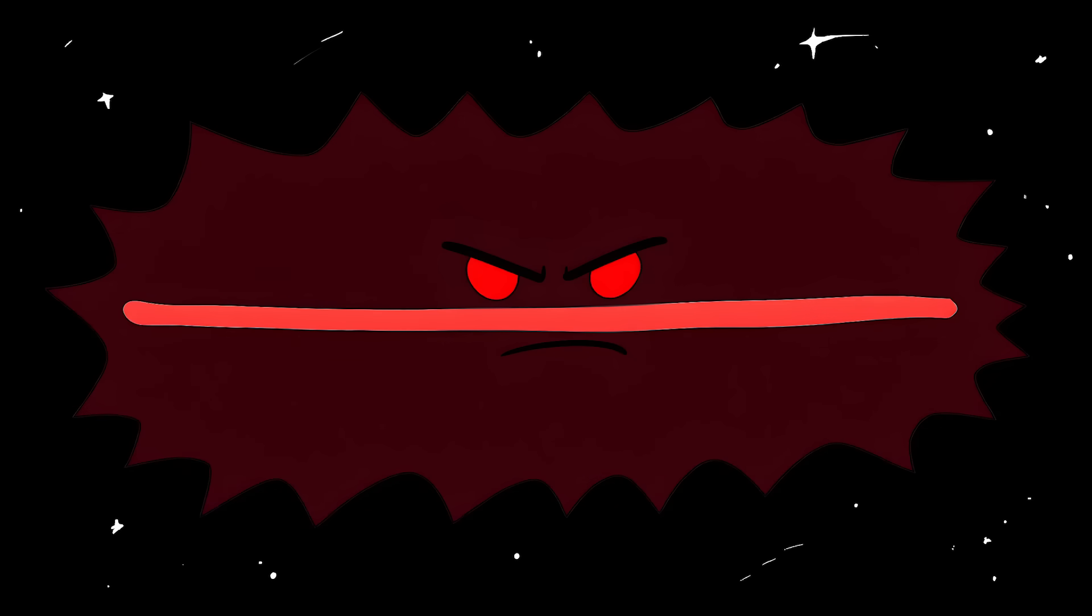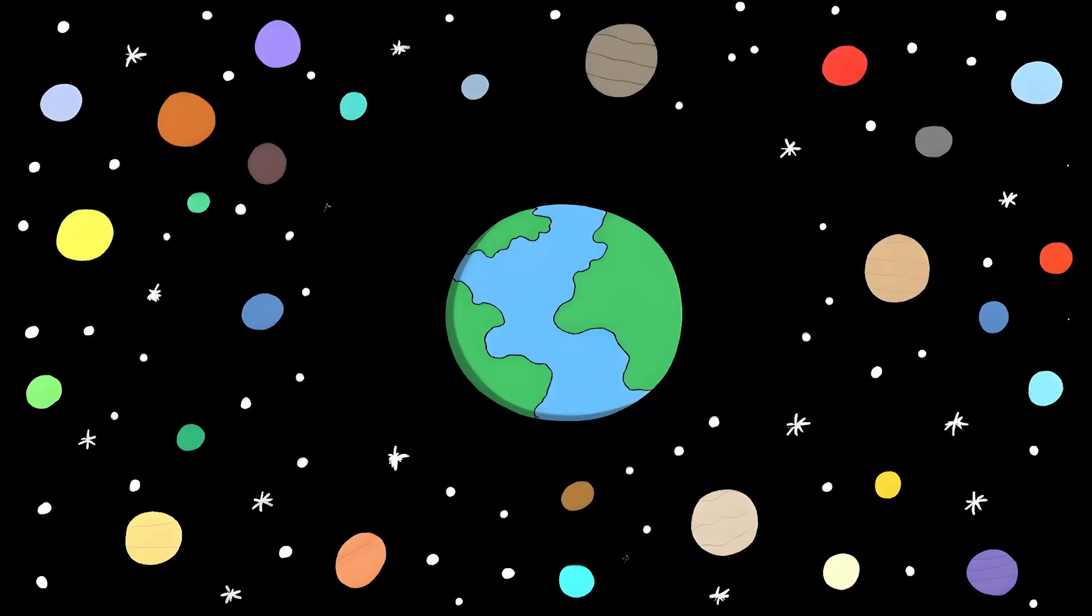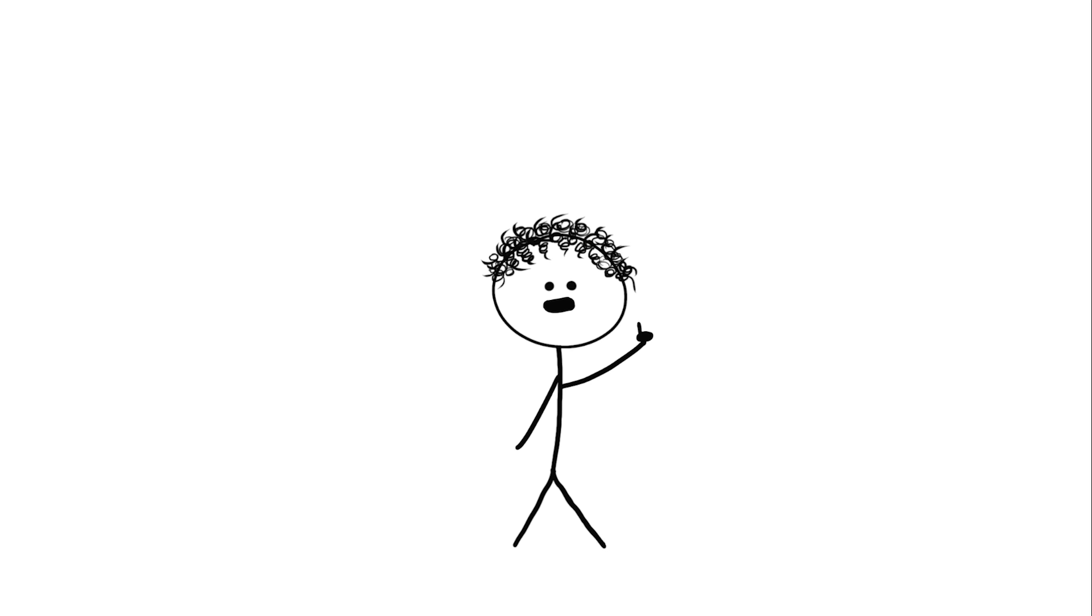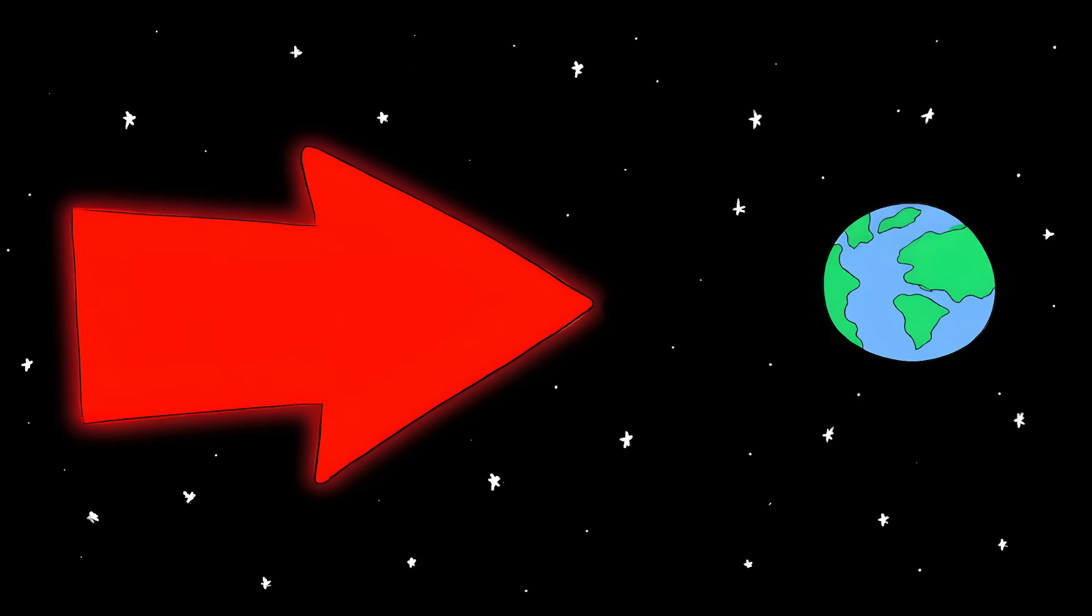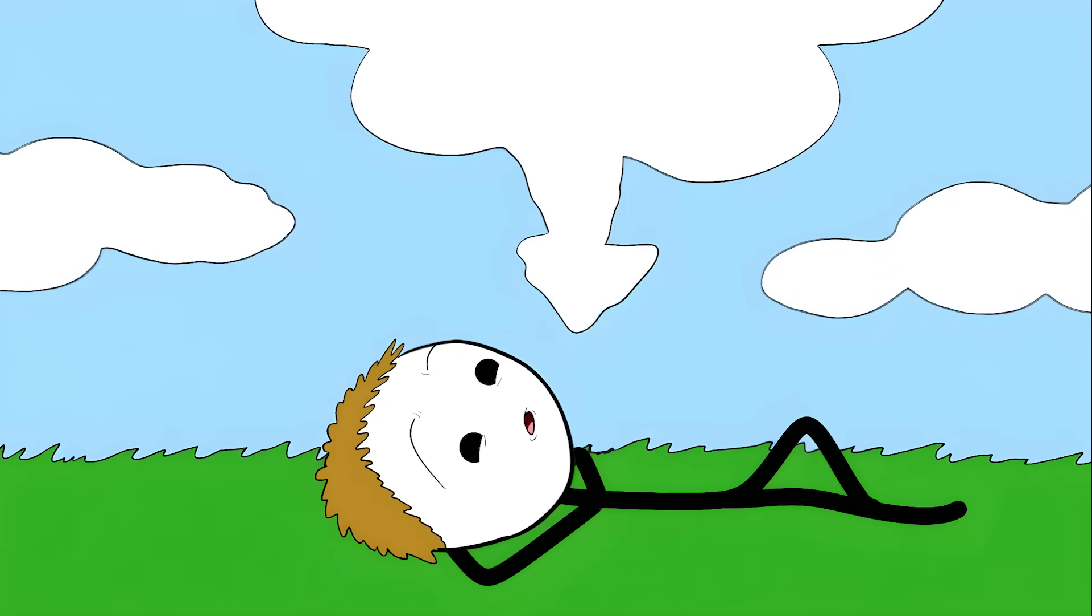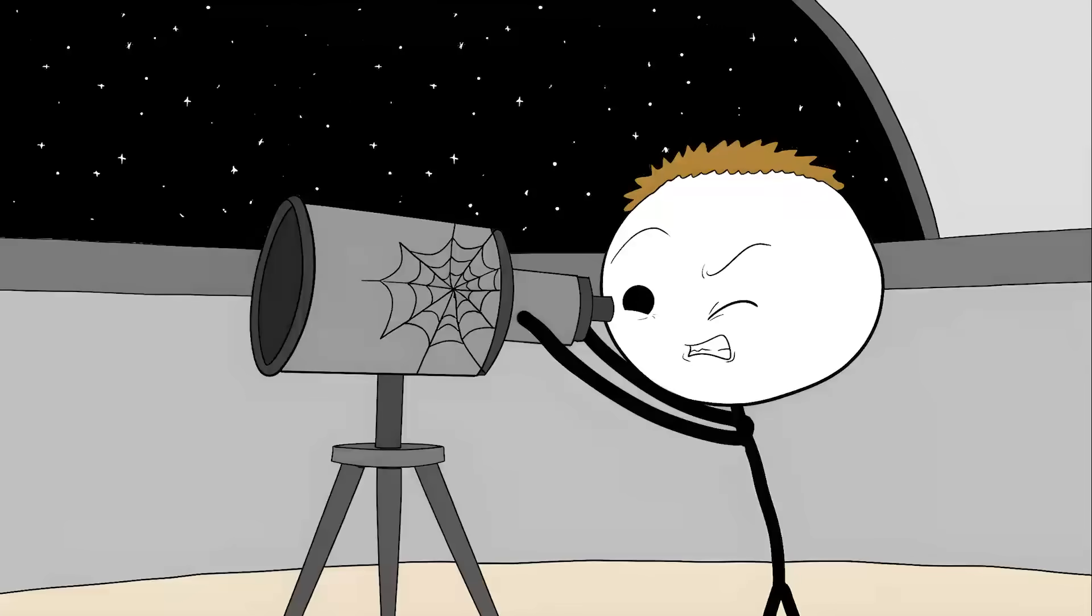Scientists called this the axis of evil because it's basically contradicting one of our most important ideas about the universe. We've always thought that Earth isn't special. We're just one random planet orbiting one random star in one random galaxy. But this axis is suggesting we might not be so random after all. Some scientists think it's just a coincidence, like seeing shapes in clouds.